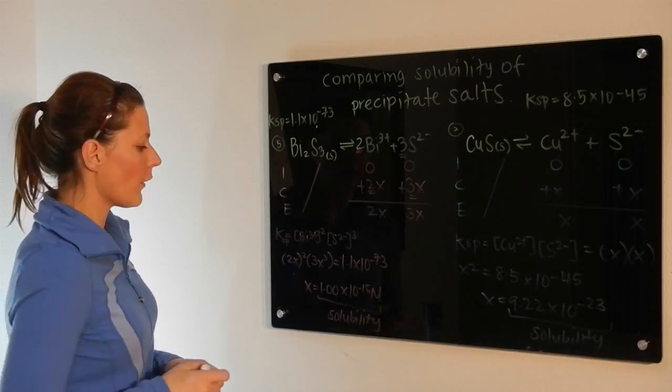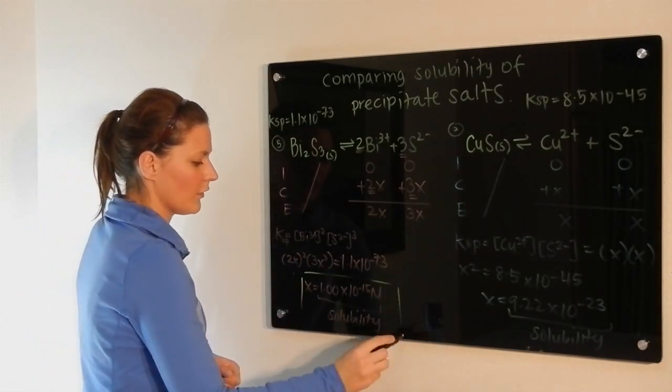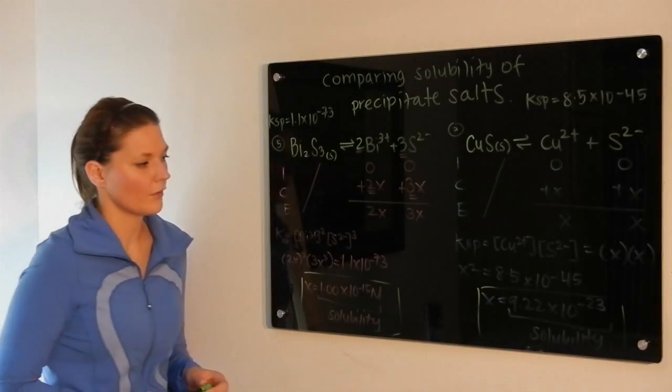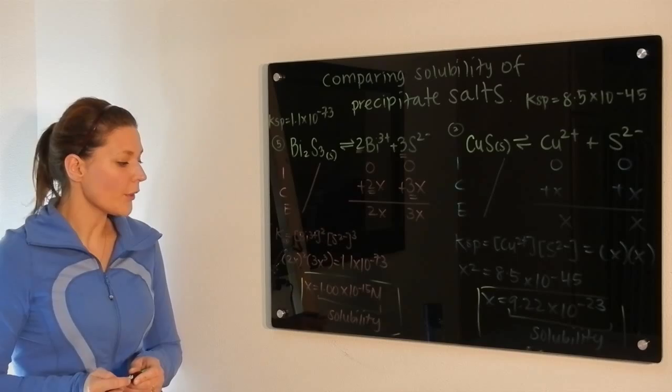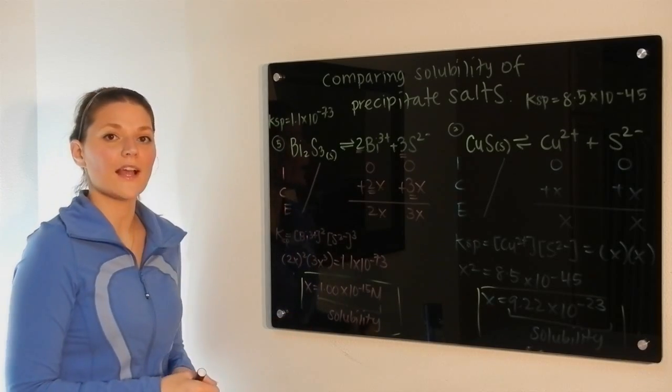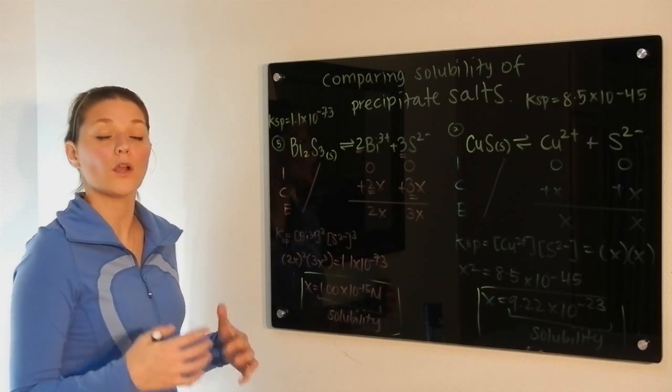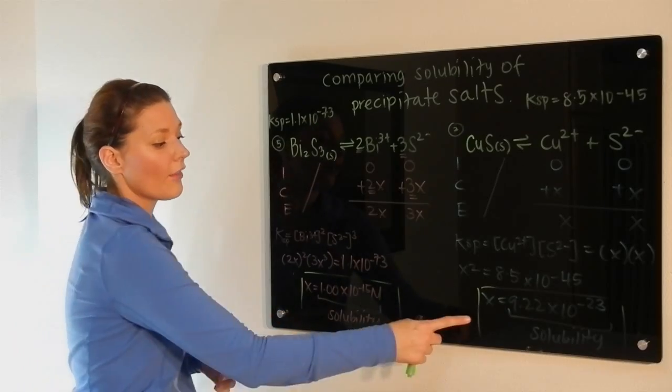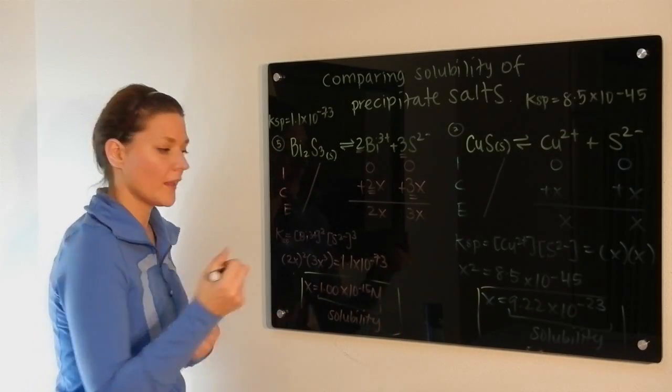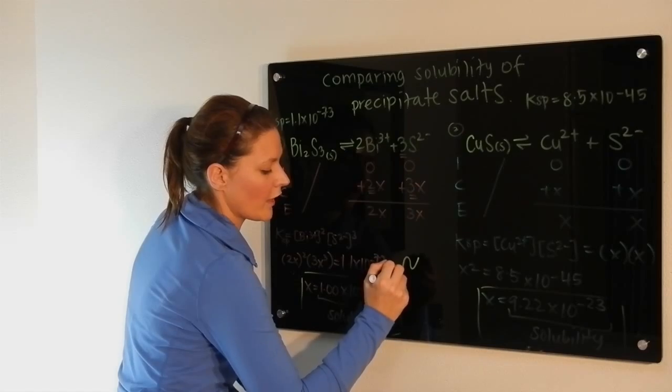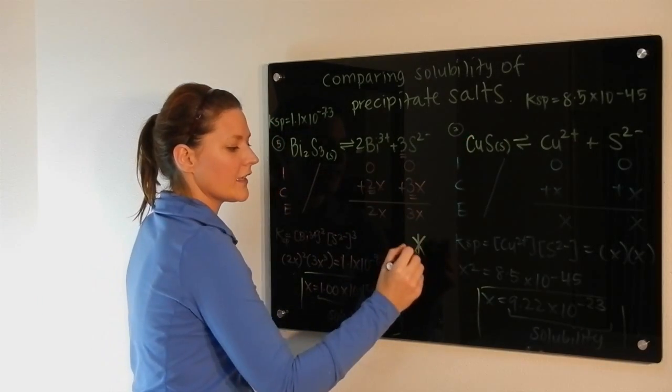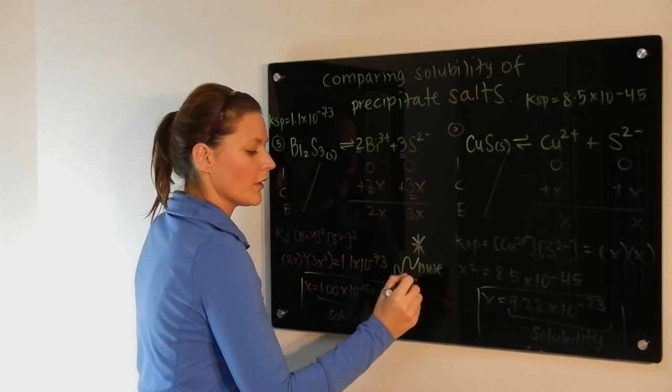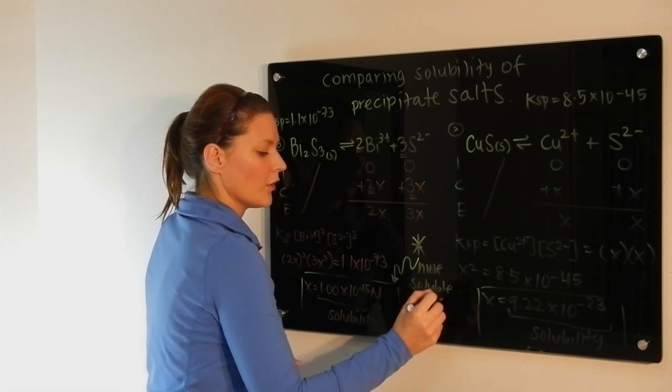So our next goal now is to take a look at this value and compare it to this value. When you do that, you will notice that the bismuth sulfide has a much higher value, or a greater amount dissolved in solution, than does the copper 2 sulfide. That would mean that contrary to what you may have thought by looking at Ksp values, this here is the more soluble salt.